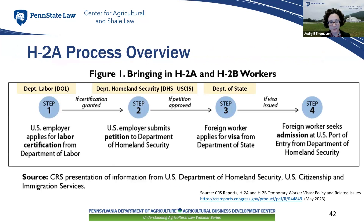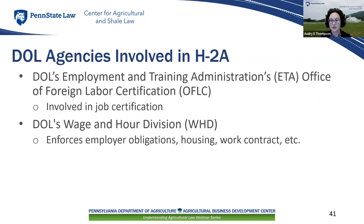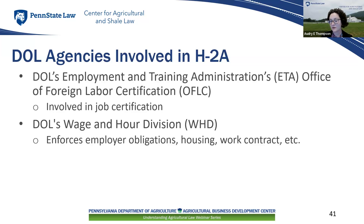Back to our big process overview for that Department of Labor first step. There are two DOL agencies involved in this H-2A process. The first is ETA's Office of Foreign Labor Certification, where you apply for the certification. Then there's DOL Wage and Hour Division, which is the enforcement arm — they're the ones who will come onto your property, look at your housing, interview your employees, and so forth. Most ag employers are very familiar with the Wage and Hour Division.